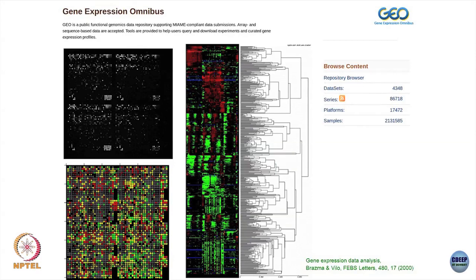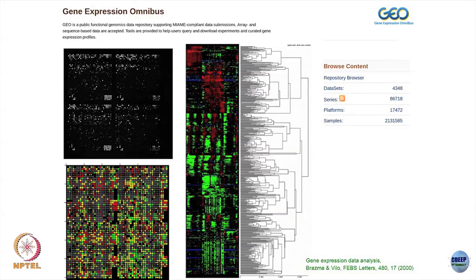You can build correlation matrices among genes by looking at this gene expression data as a function of time, and that tells you functional information about how genes interact with each other and how different proteins interact with each other. If one protein is interacting with another protein, those two genes might be turned on or off at the same time. The gene expression omnibus is an open-source genomics database where you can find gene expression data for different organisms and different cell types.